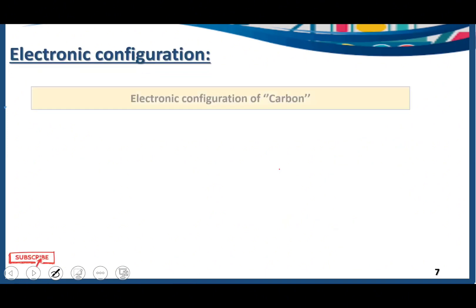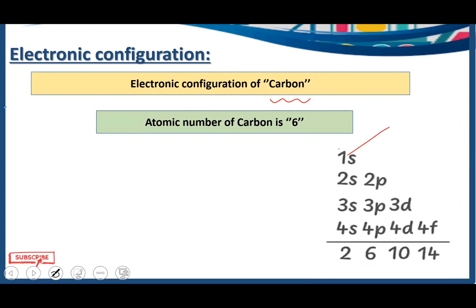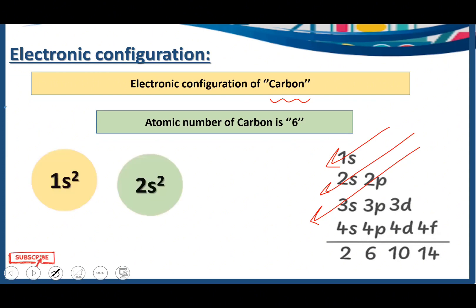Electronic configuration of carbon — atomic number 6. Carbon is a very important element as it is the backbone of all organic compounds. We write 1s2, 2s2, and then 2p2. Counting the electrons: 2+2=4, and 4+2=6. So the electronic configuration of carbon is 1s2, 2s2, 2p2.